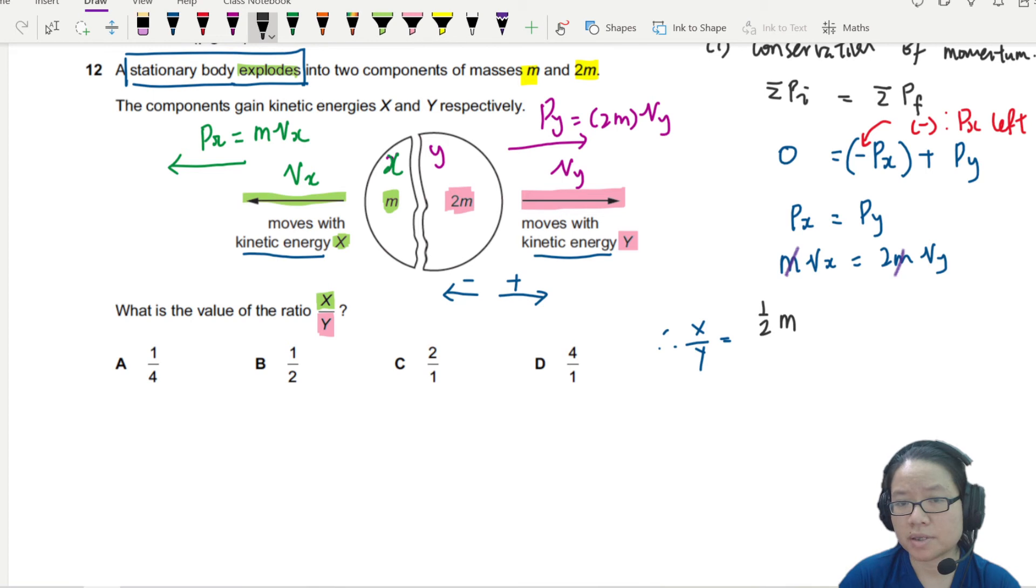Half the mass of x, the speed of x squared. Divided by half the mass of piece y, the speed of y squared. But the half and half can immediately go away.